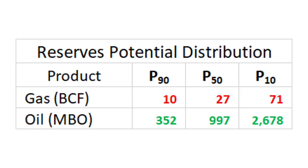We summarize the oil and gas results at P90, P50, and P10. If we drill this well, the low case (P90) should yield at least 10 BCF, and the high case (P10) is 71 BCF. That's how you do it — using Monte Carlo analysis combined with volumetrics. Hopefully that was interesting and helpful. Please contact me if you have any questions. Thanks for watching.